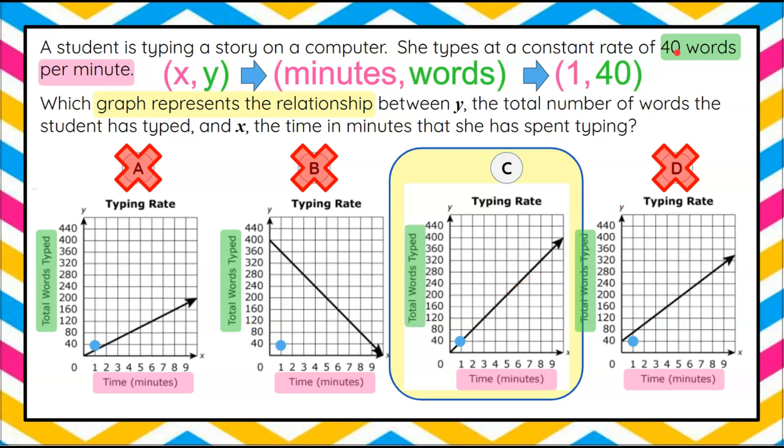But that is how you can take a real world relationship, write it as an ordered pair to determine the graph.